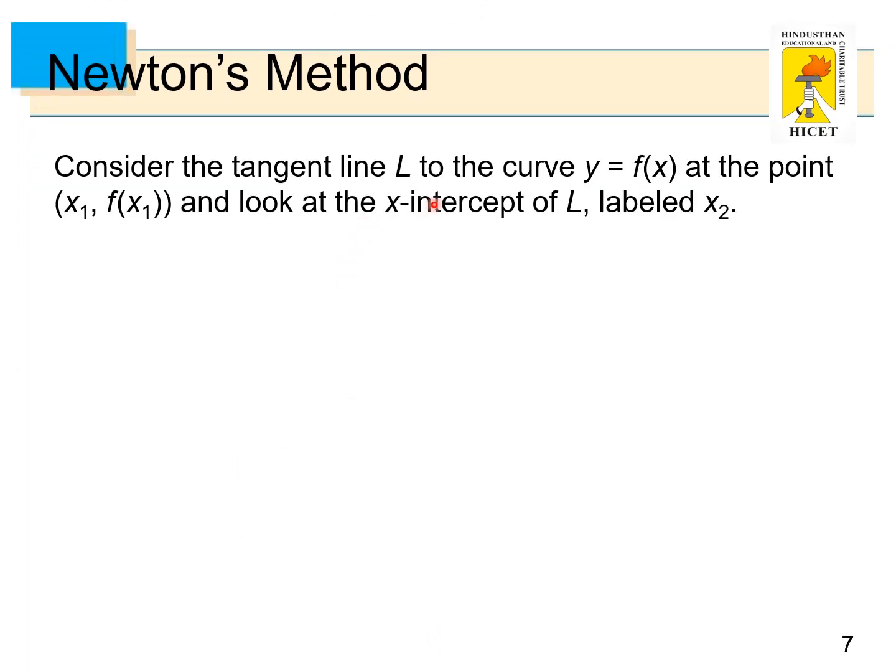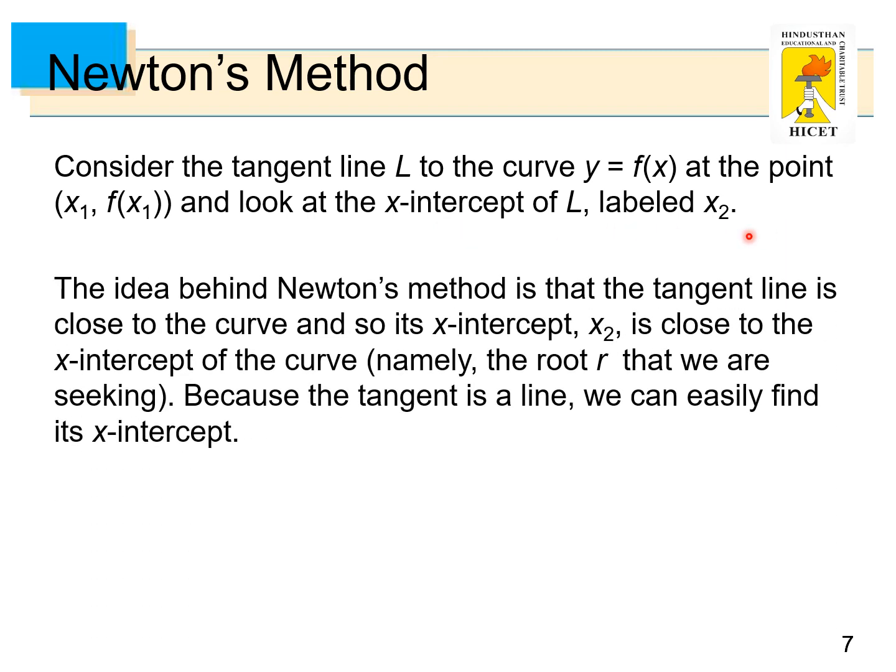Consider the tangent line L to the curve y = f(x) at the point (x1, f(x1)) and look at the x-intercept of L labeled x2. The idea behind Newton's method is that the tangent line is close to the curve and so its x-intercept x2 is close to the x-intercept of the curve, namely the root r that we are seeking. Because the tangent is a line, we can easily find its x-intercept.